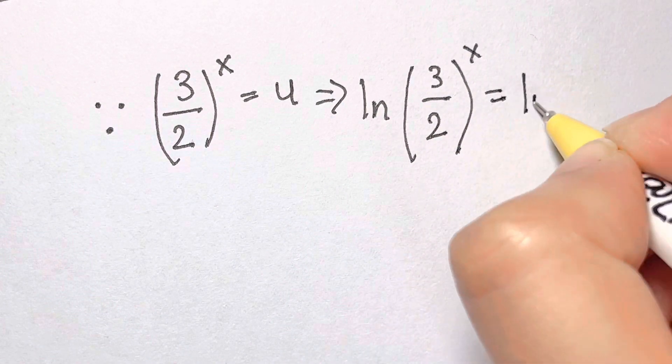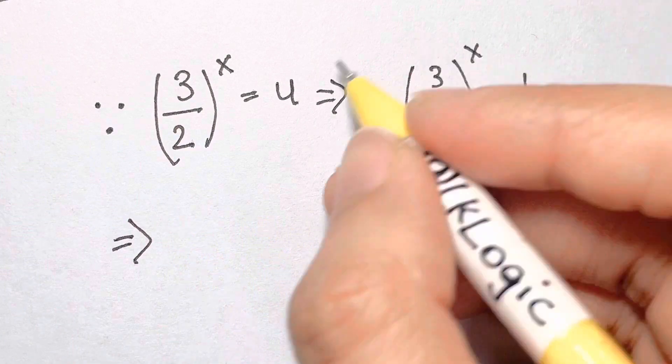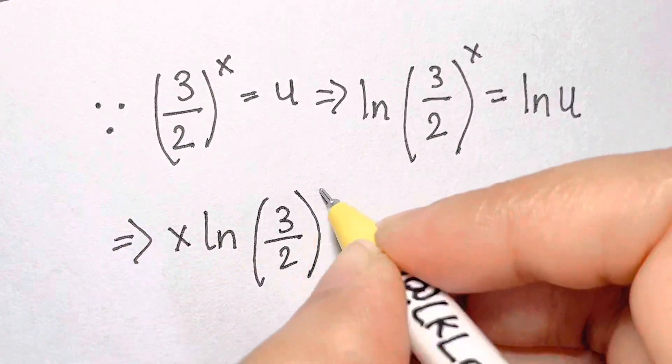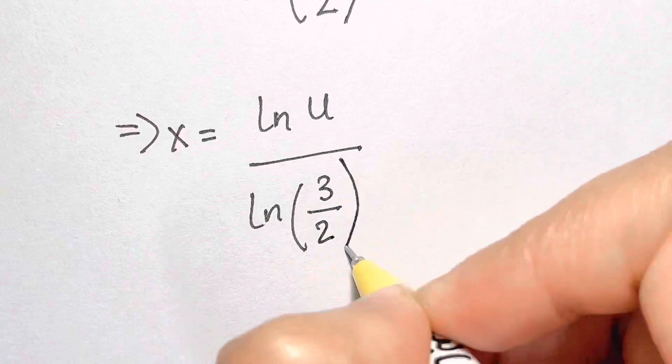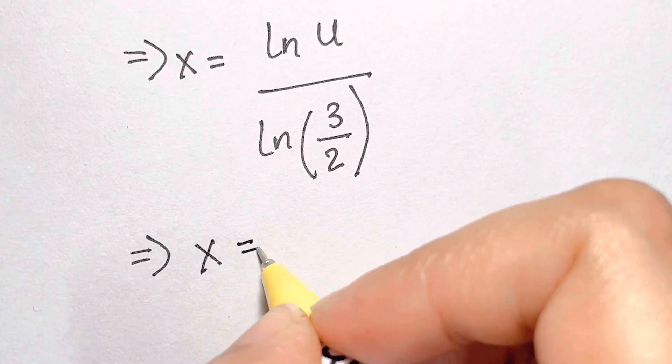Natural log of 3 over 2 to the power of x equals natural log of u. We can then bring the exponent down and solve for x by dividing by the natural log of 3 over 2. We substitute in for u and we get our exact answer.